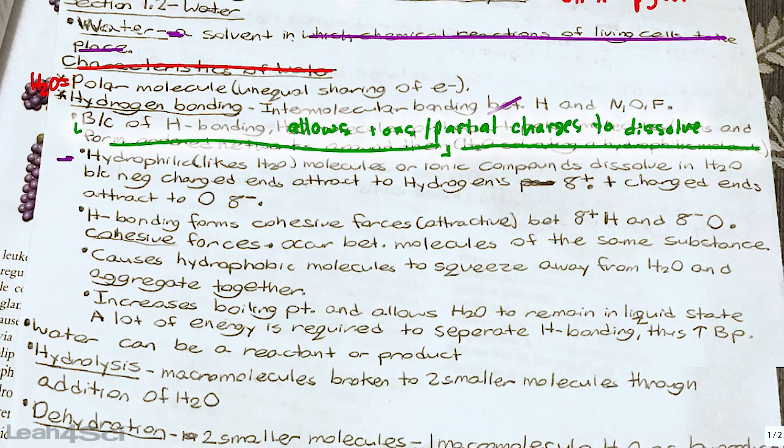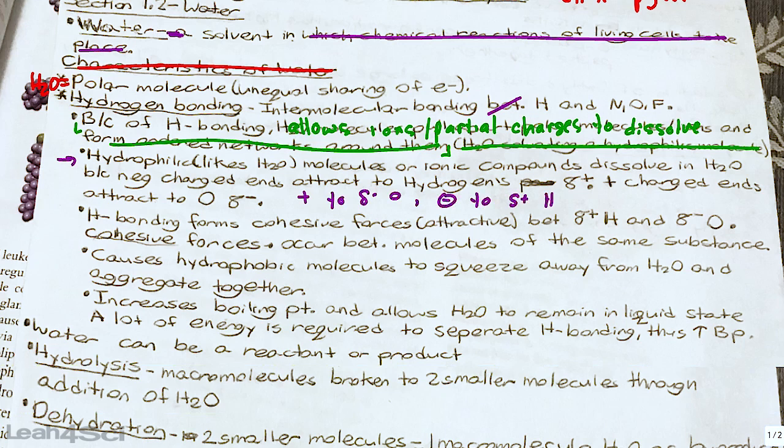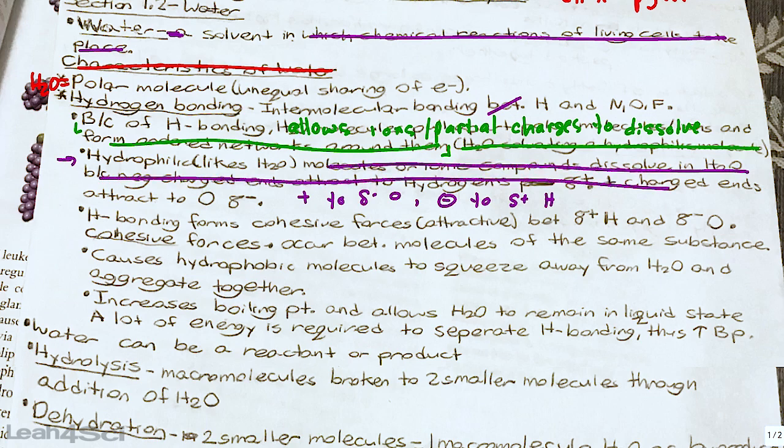So we get to the next bullet, hydrophilic. Likes H2O, that's the definition, so that's fine. Molecules or ionic compounds dissolve in H2O because negative charged ends attract to hydrogen, this is partial positive, positive charged ends attract to oxygen which is partial negative. That seems like a very long definition. So how can we simplify something like that? Hydrophilic likes H2O and then just say positive to partial negative oxygen, negative to partial positive hydrogen, that's it, that's all you needed for this entire thing. And that gives you one more little piece of notes.